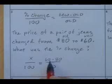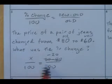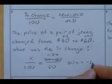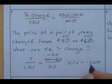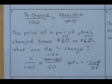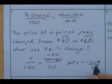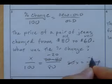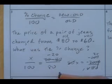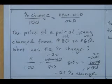60 minus 80 is negative 20, so we have x over 100 equals negative 20 over 80. To solve, I cross multiply: 80x equals negative 20 times 100, which is negative 2,000. Divide by 80 — same as asking how many 4's go into negative 100, which is the same as how many 1's go into negative 25. That's a negative 25% change, meaning the price decreased 25%.